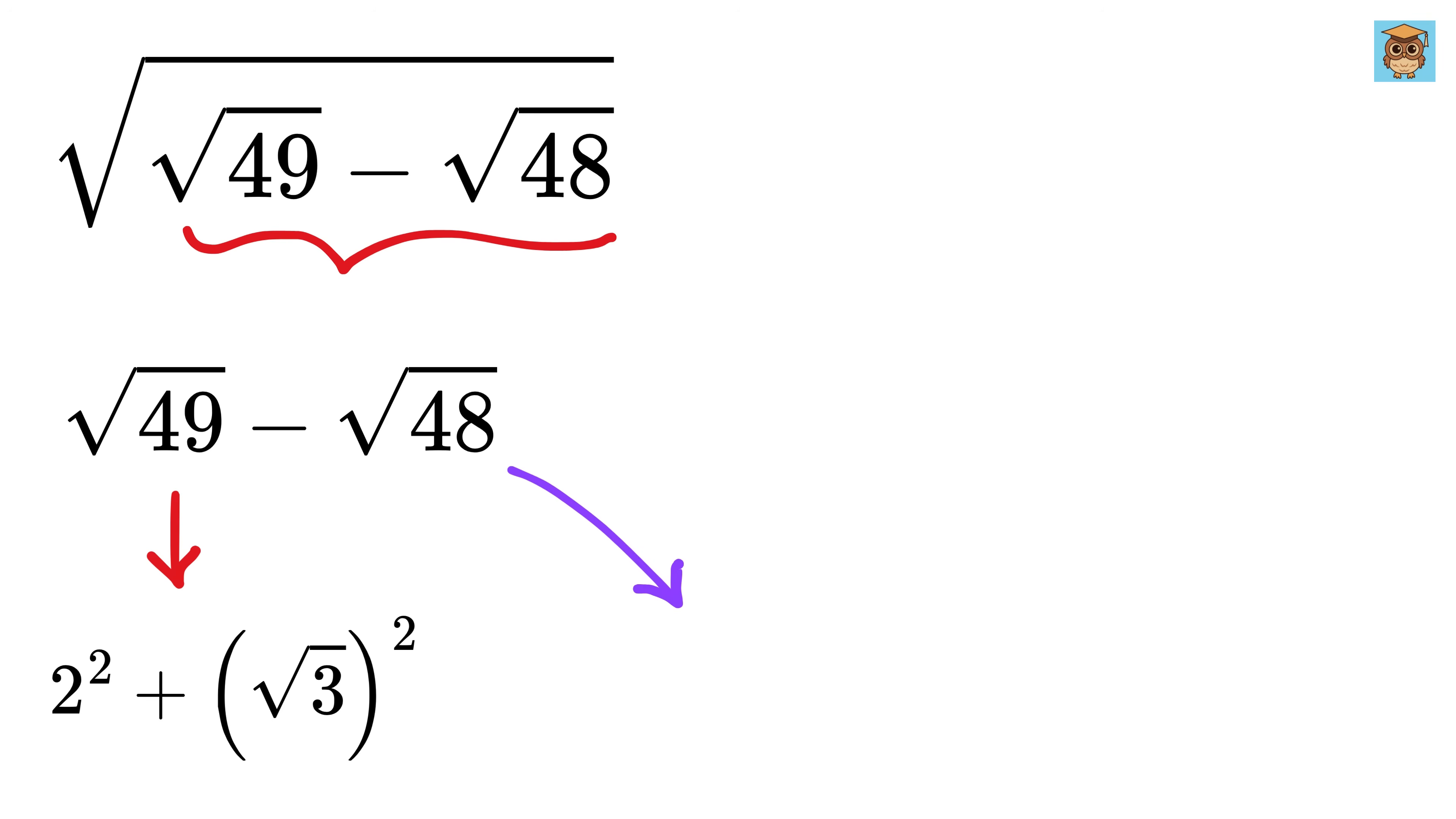Next, let's look at the square root of 48. That's not a perfect square, but it can be broken down. 48 is 16 times 3, and 16 is 4 times 4.